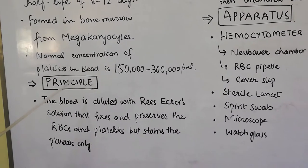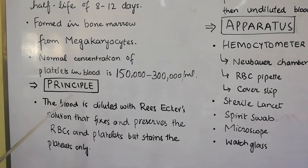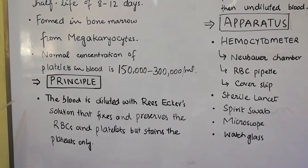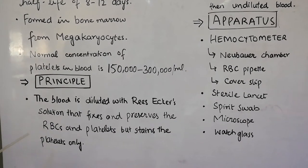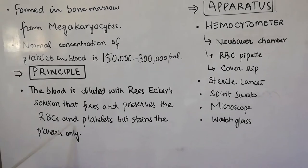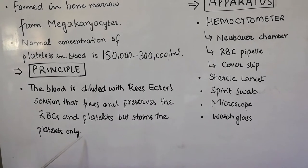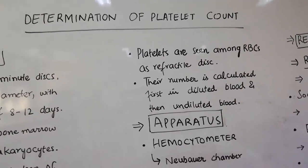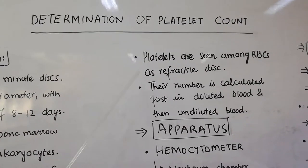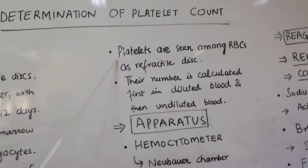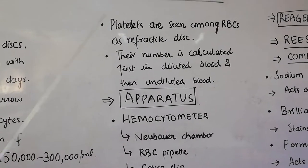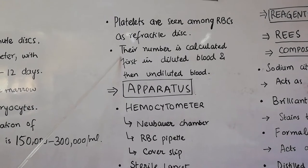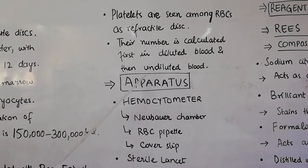Today in this practical we will help you to determine the platelet count in blood. The principle of this practical is that the blood is first diluted with a diluting fluid, in this case the Rees-Ecker solution. The Rees-Ecker solution fixes and preserves the RBCs and platelets but stains the platelets only, so it makes the identification of platelets in the Neubauer chamber easier. Platelets are seen among RBCs as refractile discs — small rounds or discs which will give a slight refractile quality. Their number is calculated first in diluted blood and then in the undiluted blood.